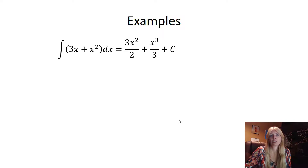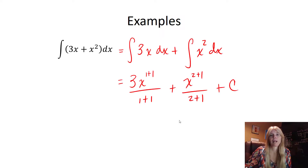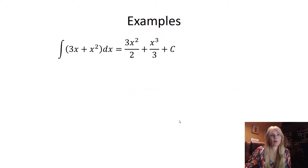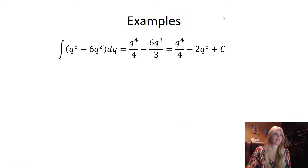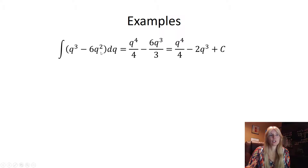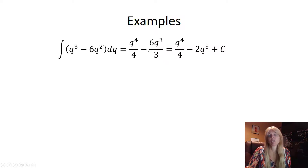Working left to right on a polynomial example: the antiderivative of (q³ − 6q²) gives q^(3+1)/(3+1) − 6·q^(2+1)/(2+1), which is q⁴/4 − 6q³/3, then simplify the fraction.